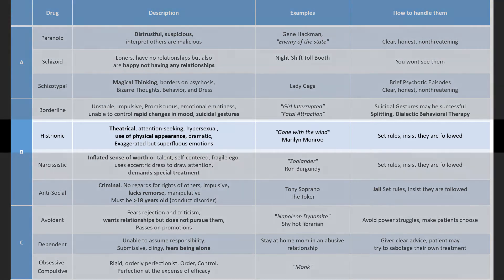The next Cluster B is histrionic. Histrionic and narcissistic personality disorders are very similar but try to tease out the differences. Someone who is histrionic is going to be very theatrical, attention-seeking, very superficial, and have extreme emotions — these patients can also be hypersexual. Histrionic personality disorder is often found in women. They do not have any deep, meaningful relationships — everything is over the top and superficial. They have a lot of trouble when they get older as their looks begin to fade and they're no longer so important. Examples include Marilyn Monroe, who is the quintessential example of hypersexual and attention-seeking, and the movie Gone with the Wind.